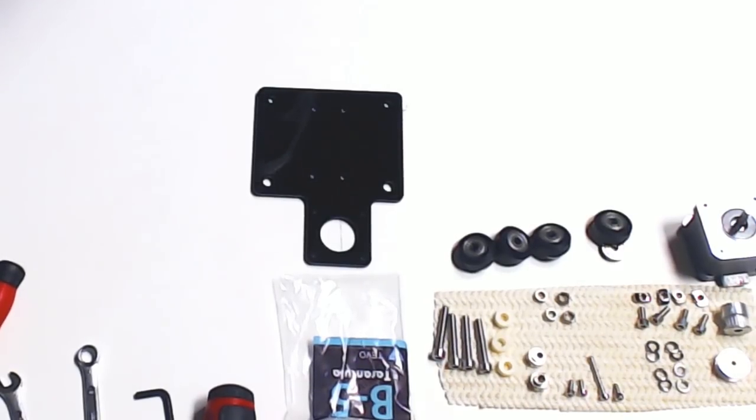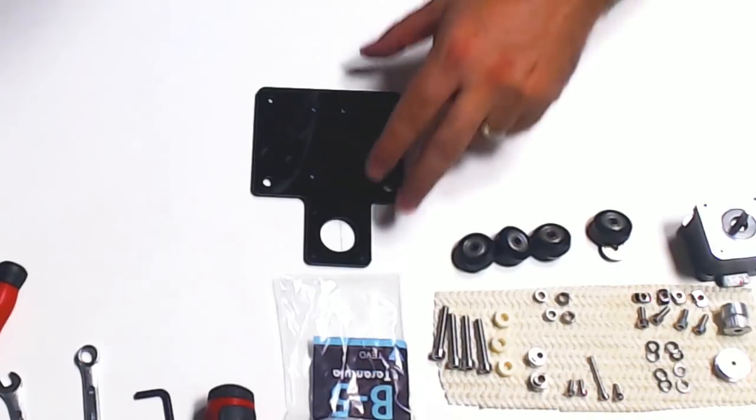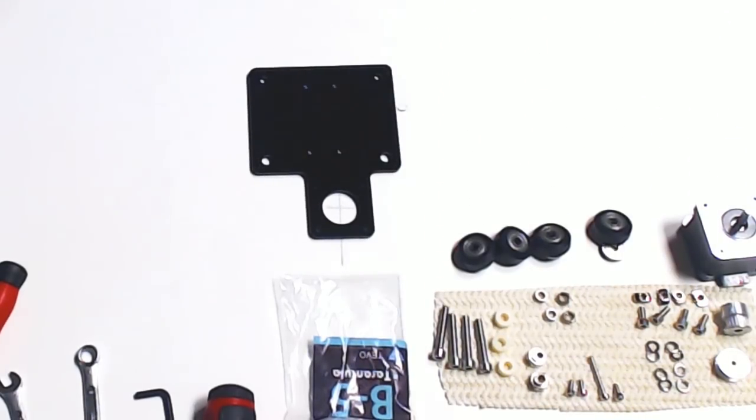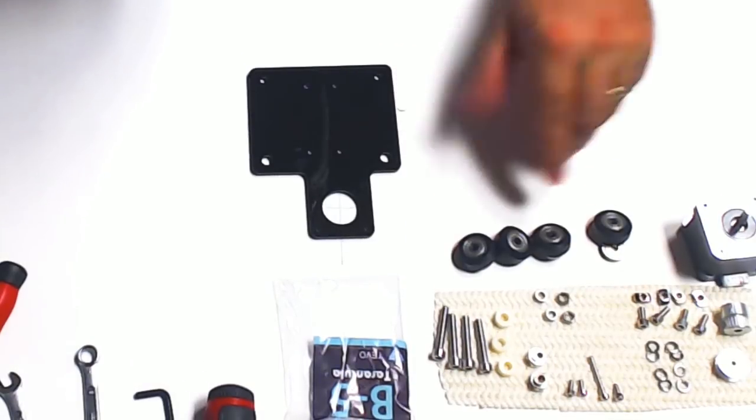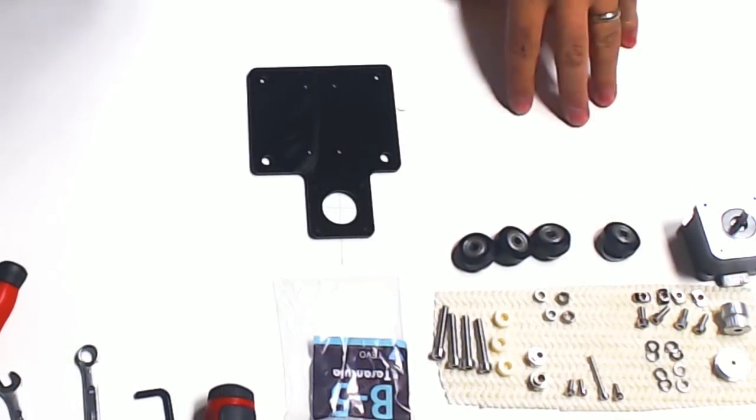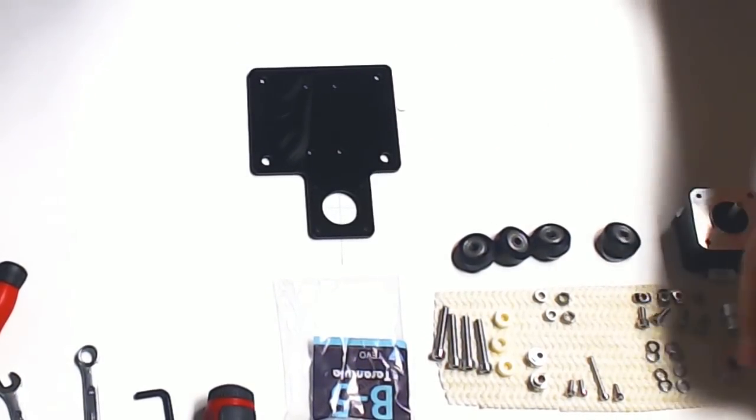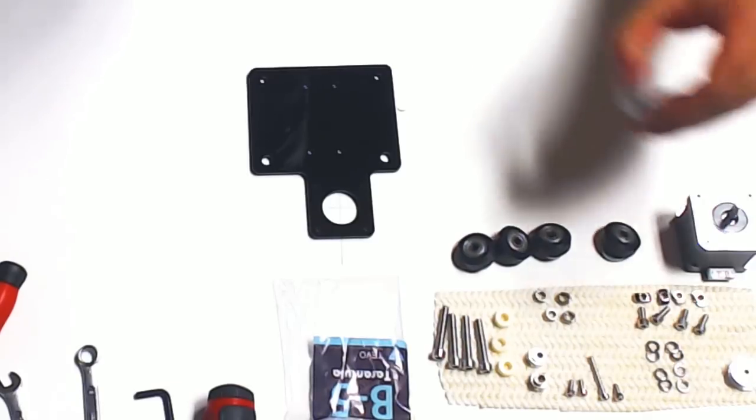Alright, here we go. Z-axis right side. This is going to be the side with the motor. Again, I have my wheel bearings with half the bearings popped out. I have my stepper motor. I have one inertia pulley.